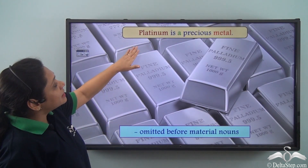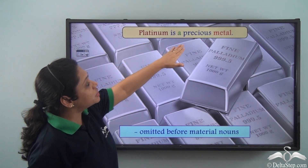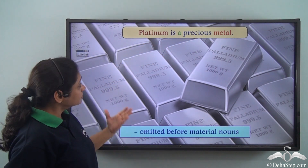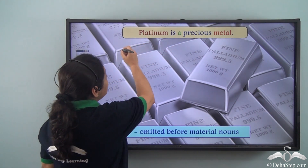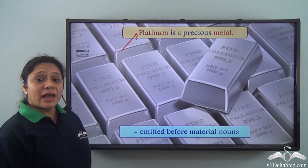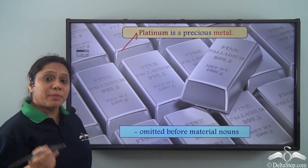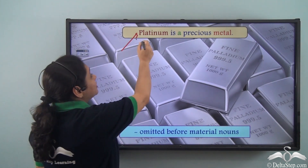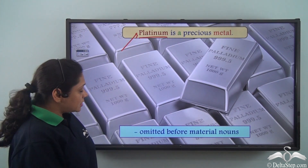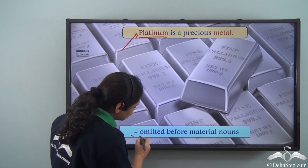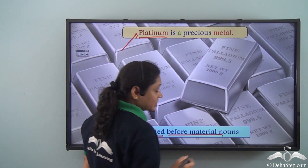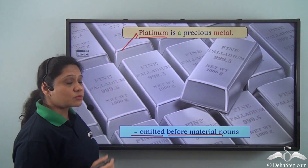In 'Platinum is a precious metal,' no article is used before 'platinum.' This shows that articles can be omitted before material nouns — names of metals and other materials.